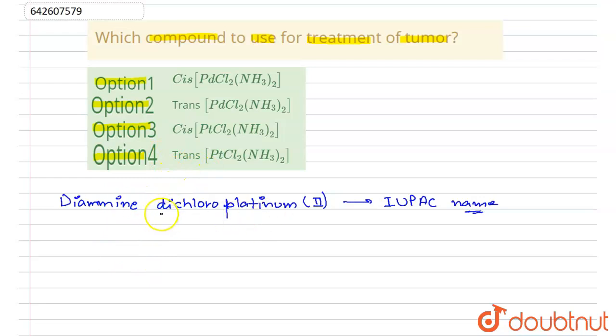If I draw the structural formula for this IUPAC name, it is of two types: CIS and TRANS. For the treatment of tumor, CIS plating is used.